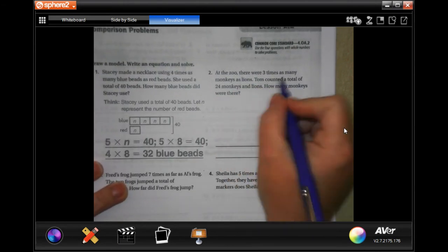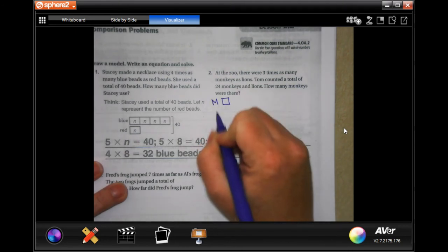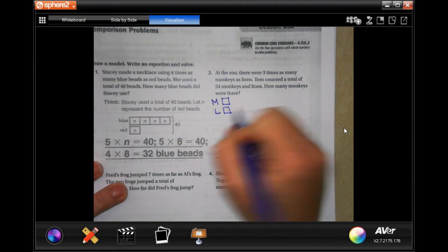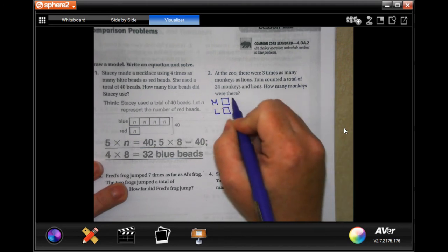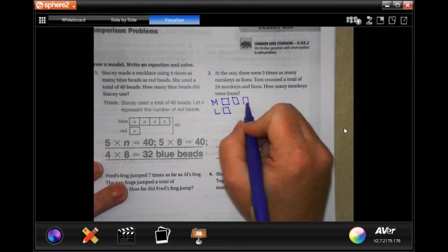At the zoo there are three times as many monkeys as lions. So this one's monkeys, this one's lions. There are three times as many monkeys as lions, which means if lions has one, monkeys has three.